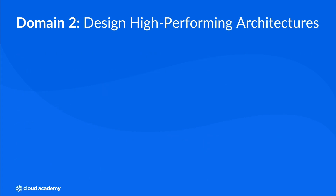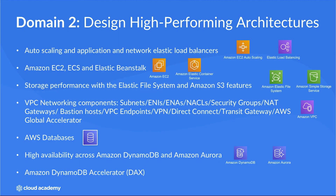Looking at domain 2, you must understand how to design high-performing architectures across the compute, storage, networking and database categories. The key focus is to ensure you know which services to use and configure to implement elastic and scalable solutions for compute workloads. We will cover the configuration of auto scaling and application and network load balancers, in addition to services such as Amazon EC2, Amazon Elastic Container Service and AWS Elastic Beanstalk.